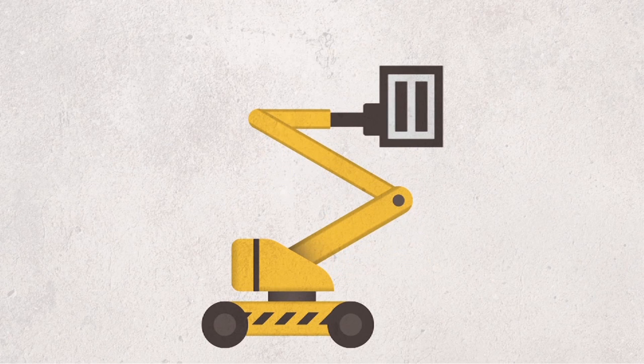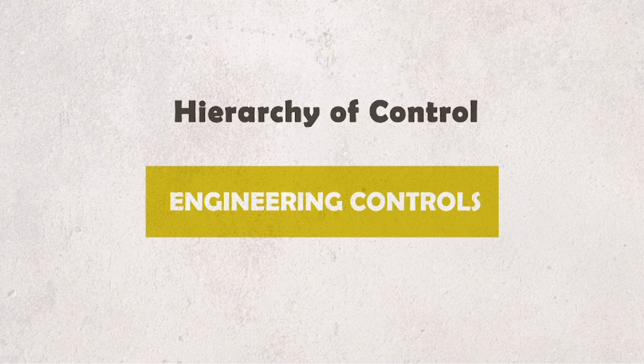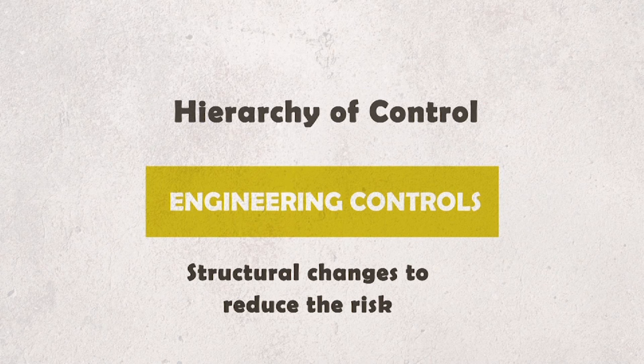If both of the first two approaches are not feasible, use engineering controls or administrative measures. Engineering controls entail structural changes to machine, process, or surroundings to reduce the risk. For example: